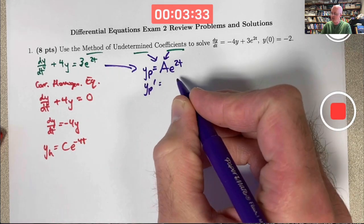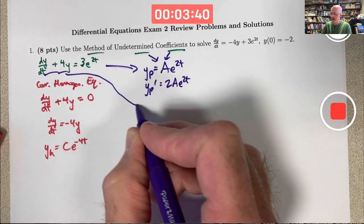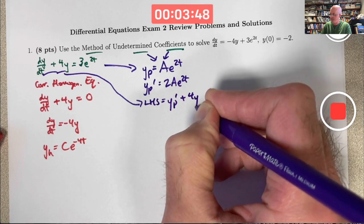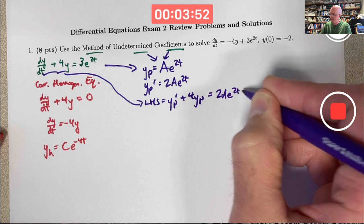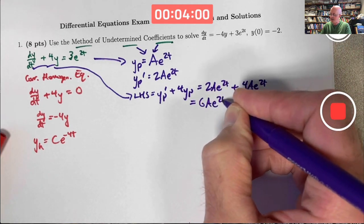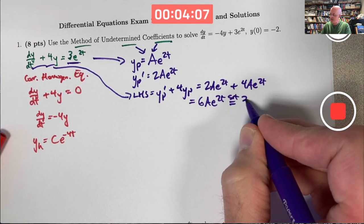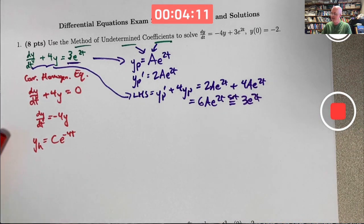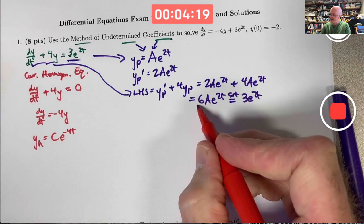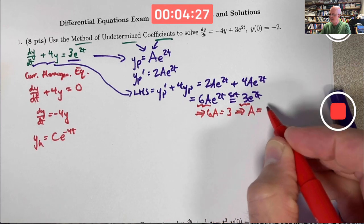What is its derivative? Use the chain rule and get an extra factor of 2: you get 2a e to the 2t. Plug that into the left-hand side of the linear operator form. The left-hand side becomes yp' plus 4yp. yp' is 2a e to the 2t, and 4yp is 4a e to the 2t. Those are like terms that can be combined to 6a e to the 2t. Now I want to set this equal to the right-hand side, 3e to the 2t. The only way that's going to happen is if 6a equals 3, therefore a is 1/2.